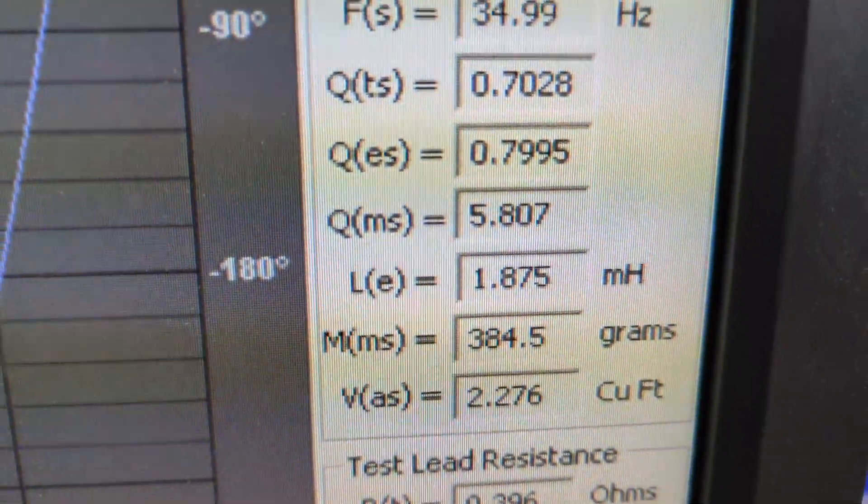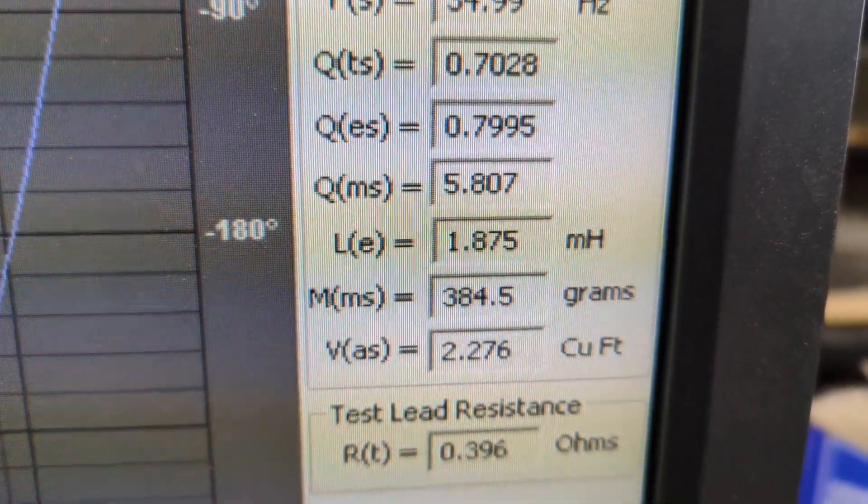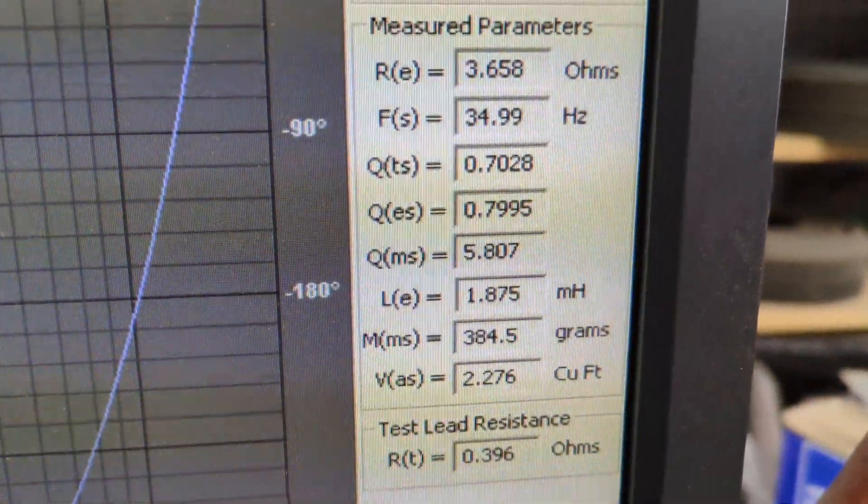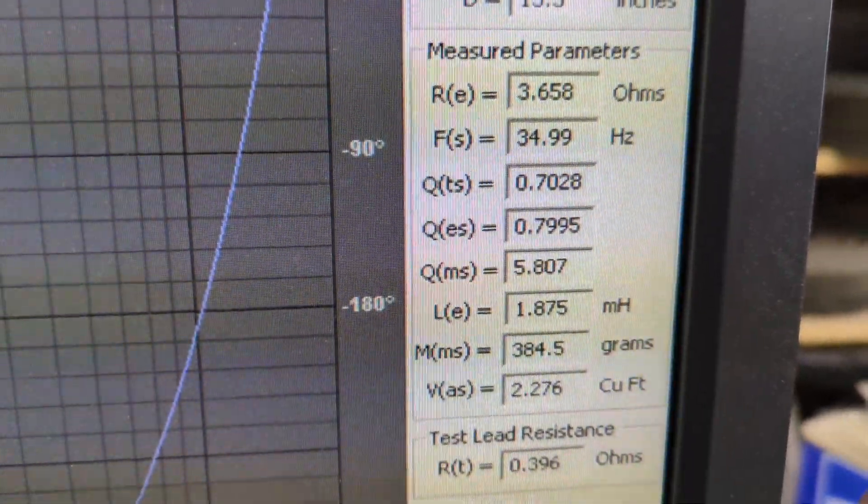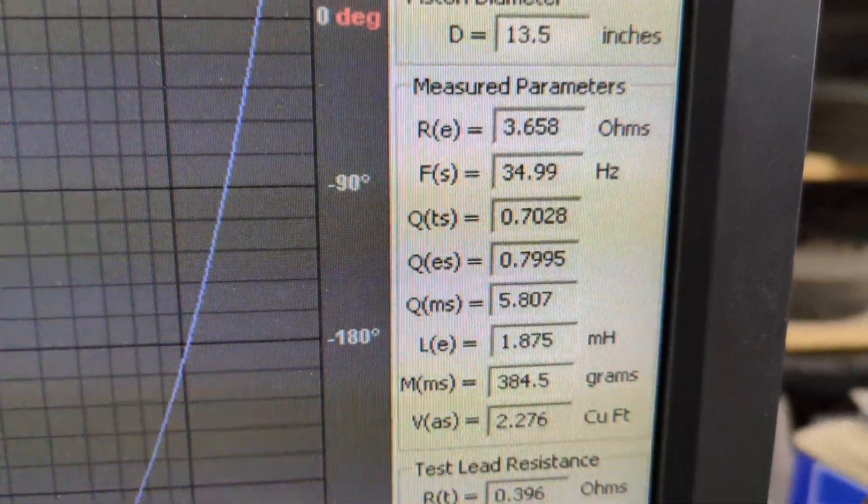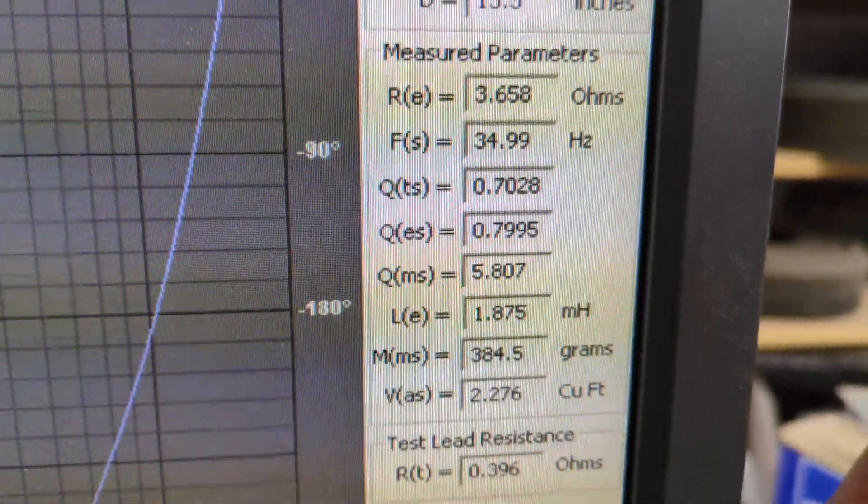So a little on the small side, which is normal for a motor that's so powerful. I'm sure Rockford probably recommends right around three to even four cubic foot, which you can go that big. It just tends to be a little more boomy and less accurate.